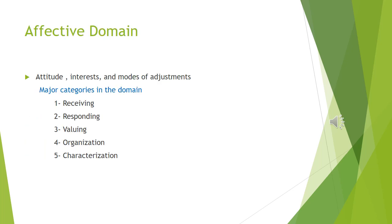Dear students, now we head towards the next domain in the taxonomy, which is affective domain. Affective domain is concerned with attitudes, interests, and modes of adjustments. The major categories in the affective domain, starting from lowest to highest, are: receiving, responding, valuing, organization, and characterization.